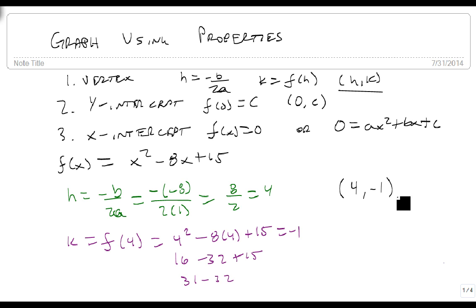Our y-intercept is real easy again because to get the y-intercept we plug in f of 0, which is 0 squared minus 8 times 0 plus 15, which gives us the point (0, 15).